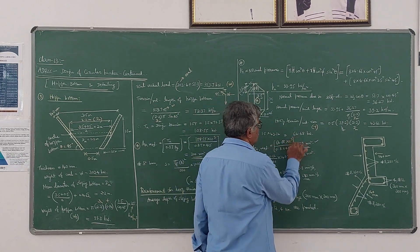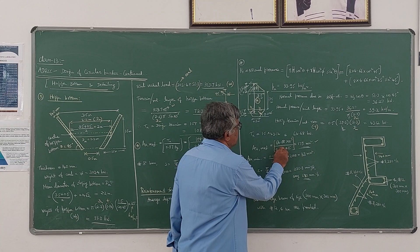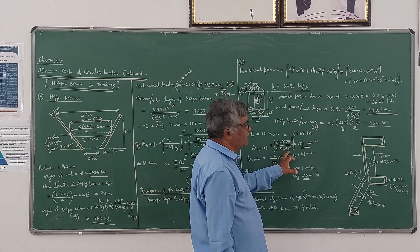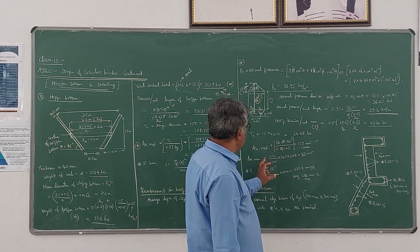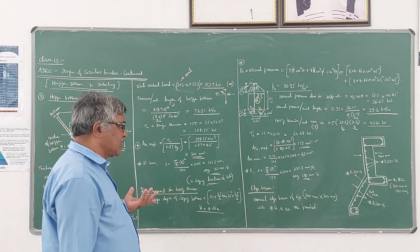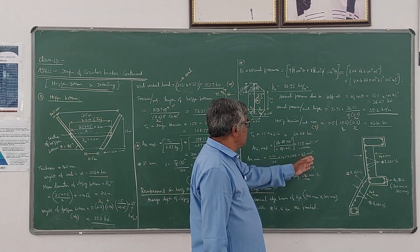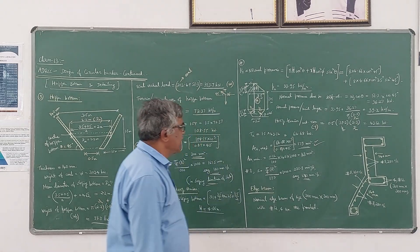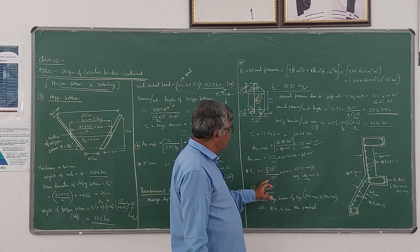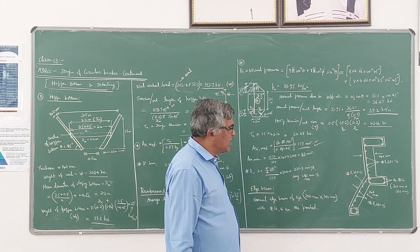For that the reinforcement required is Tu divided by 0.87 fy, which comes out to be 179 mm square. We have seen that the minimum reinforcement to be provided is 0.12 percent of the cross-sectional area of the hopper bottom, which comes out to be 168 mm square. But 179 mm square is more than the minimum, therefore we have to provide 179 mm square. Assuming 8 mm diameter bars, spacing is calculated as area of 1 bar divided by reinforcement required into 1000, giving 280.8, say 280 mm center to center.